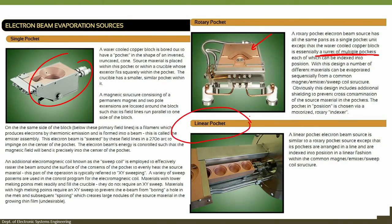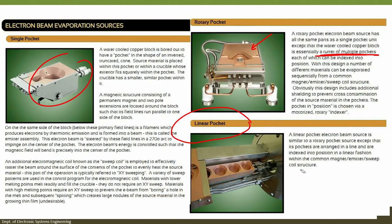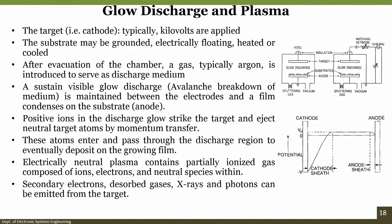A linear pocket electron beam source is similar to the rotary pocket, except pockets are arranged linearly. The source moves laterally to bring successive pockets into position under the beam. This is another way to deposit multiple materials. Moving on, we should also understand glow discharge and plasma, which are involved in sputtering.